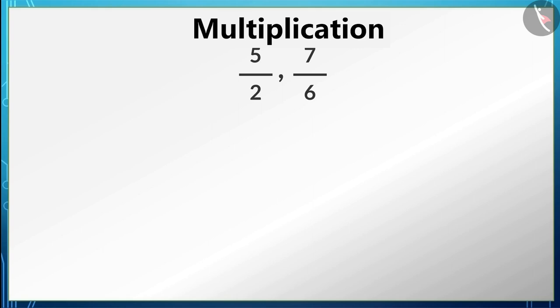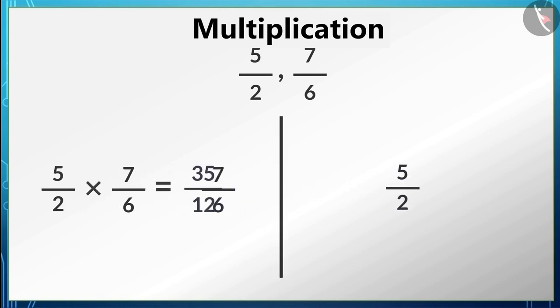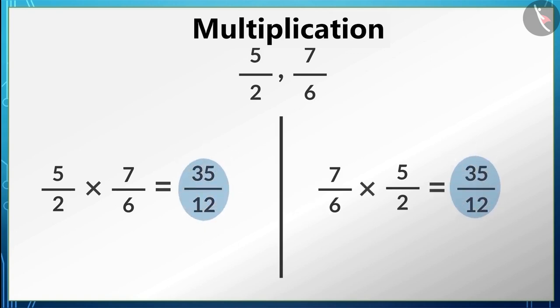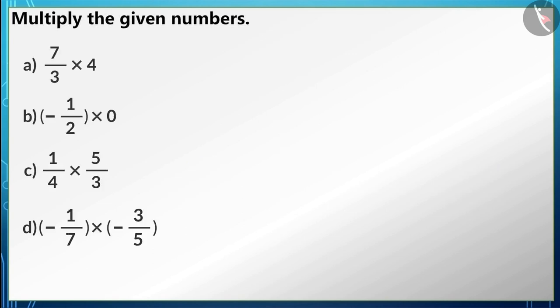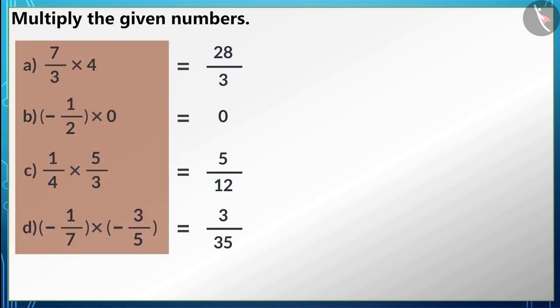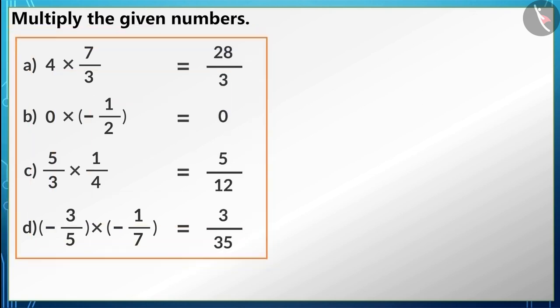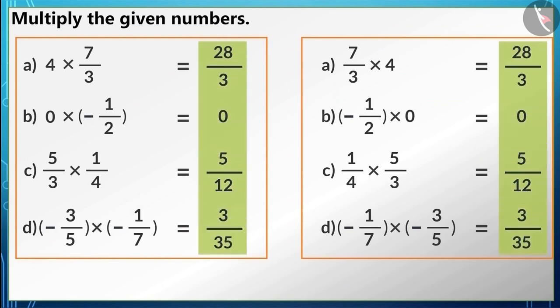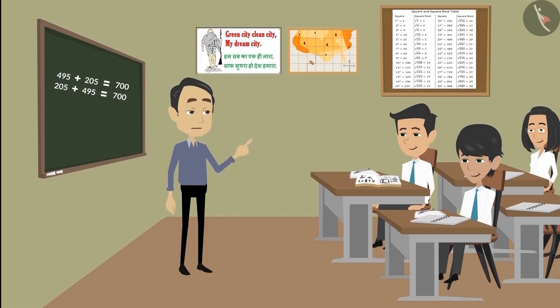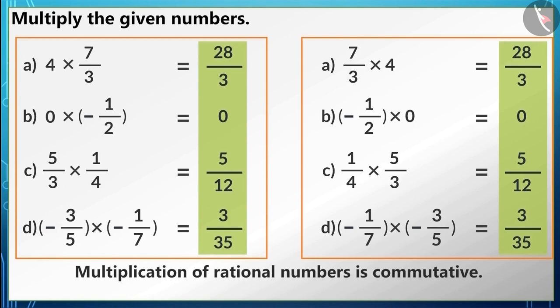Is multiplication of rational numbers also commutative? Take two rational numbers and multiply them — the answer is 35/12. Now change their order and multiply again — the answer is still 35/12. Solving all the given questions and then swapping the numbers confirms the same results. The multiplication of rational numbers is commutative: a × b = b × a for any two rational numbers a and b.